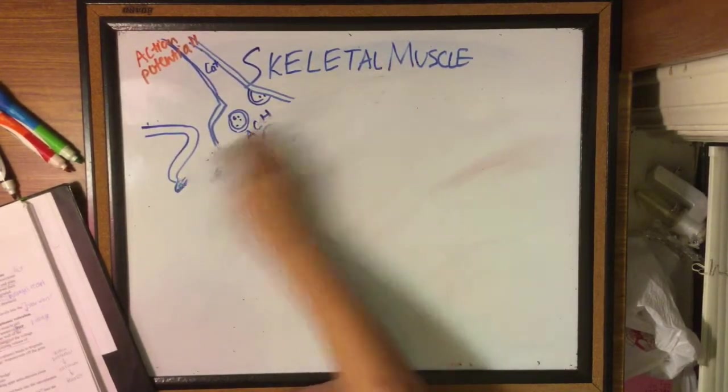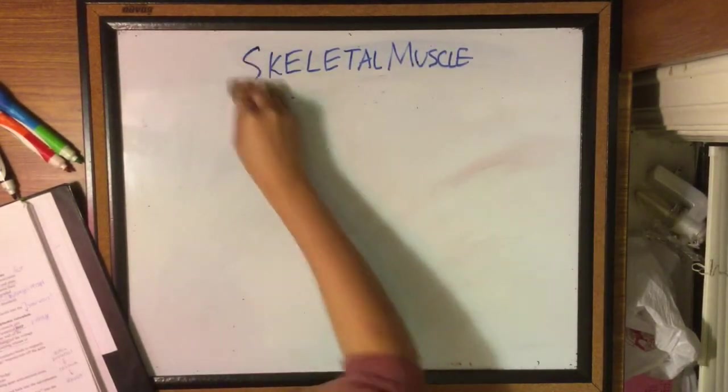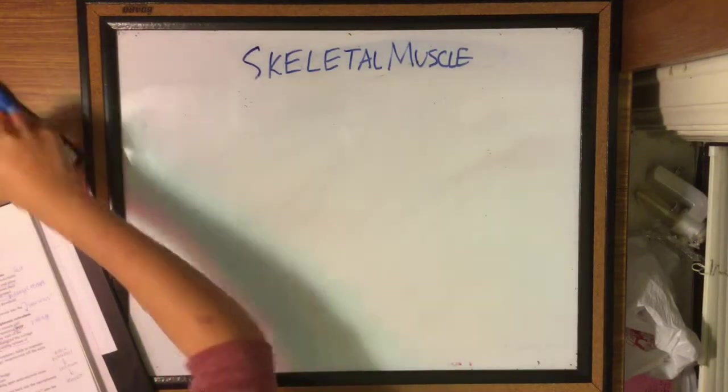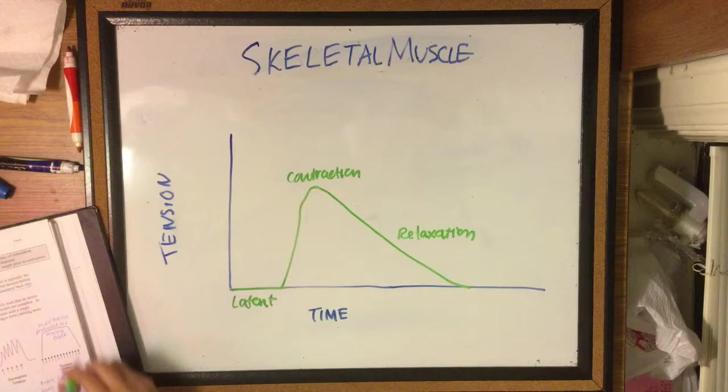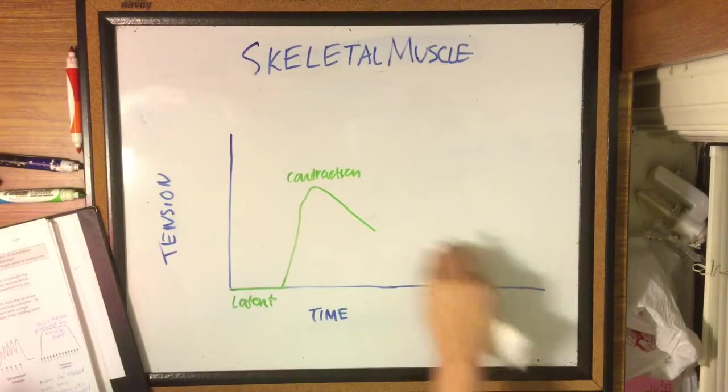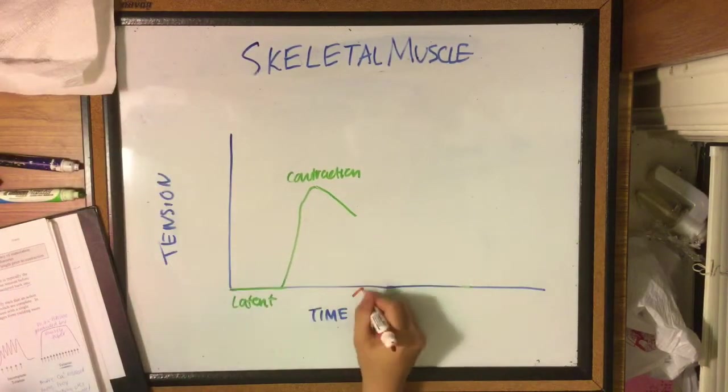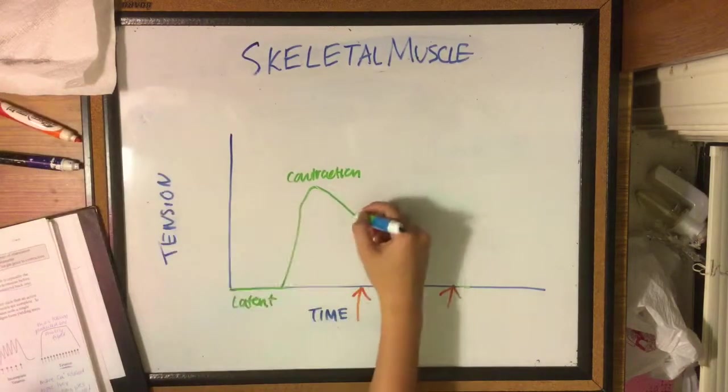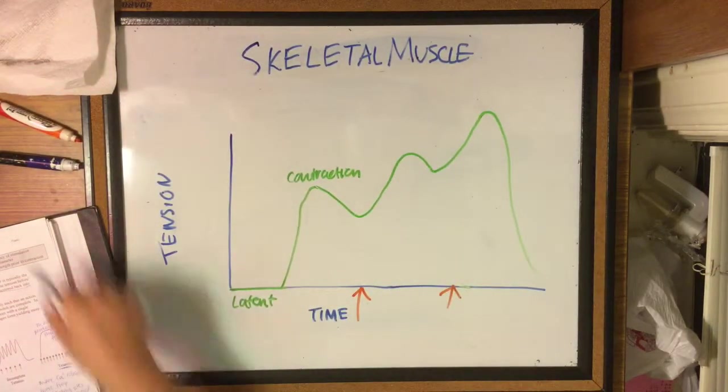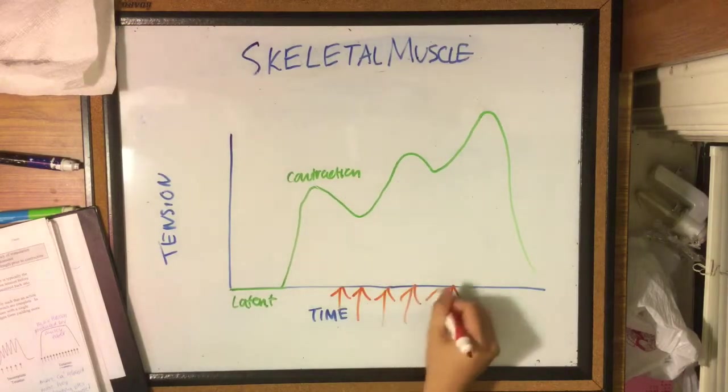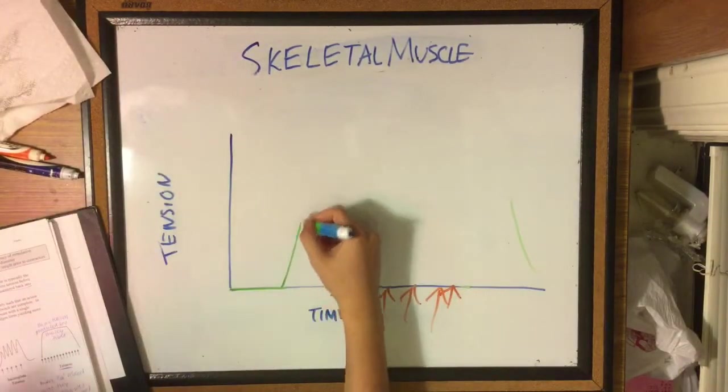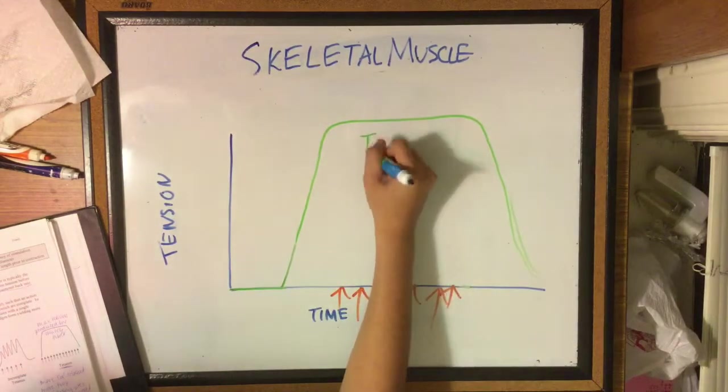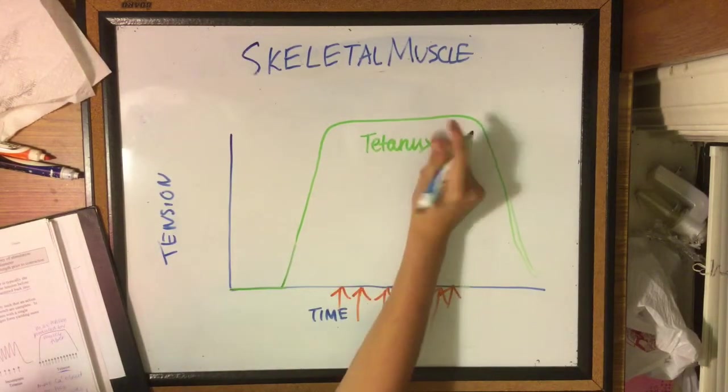A twitch is only generated in a lab and not in real life, because in real life what actually happens is your muscle will produce tetanus, which is basically maximum tension. The force generated by a single muscle fiber can actually be summated with progressively more frequent stimulation. The relaxation period becomes shorter and the maximum tension plateaus into what becomes tetanus.